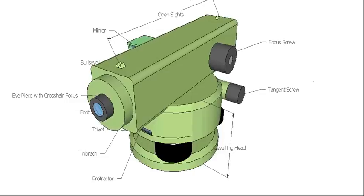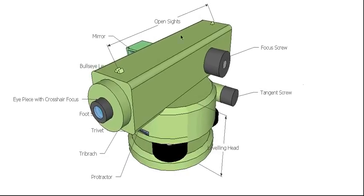On top of the instrument we have a set of open sights so we can roughly line up with our staff or whatever we're trying to take a reading of before we look through the eyepiece.